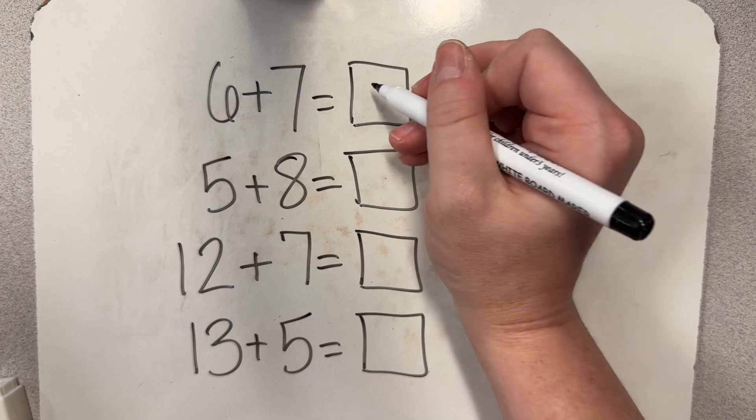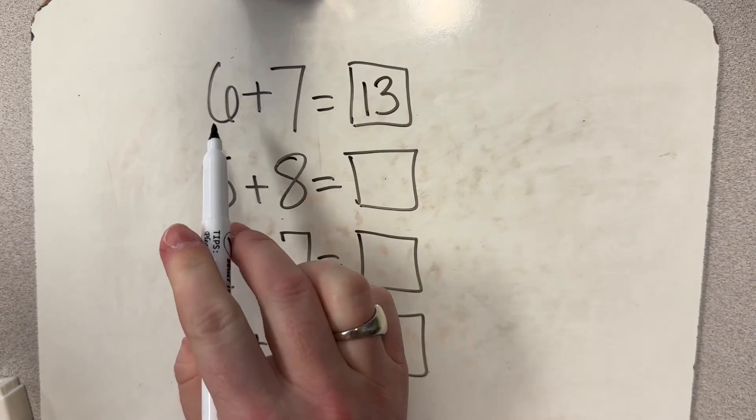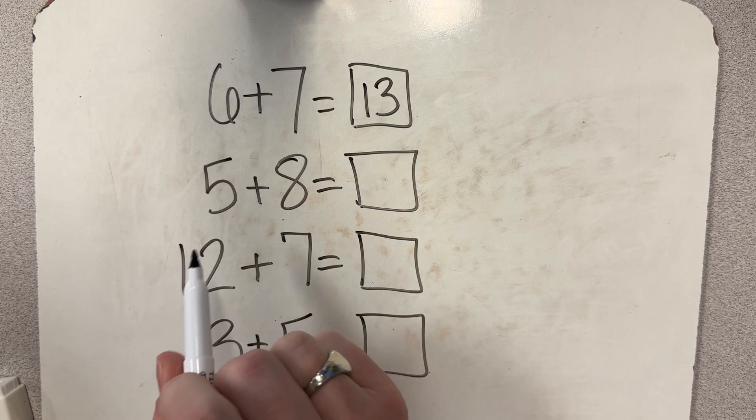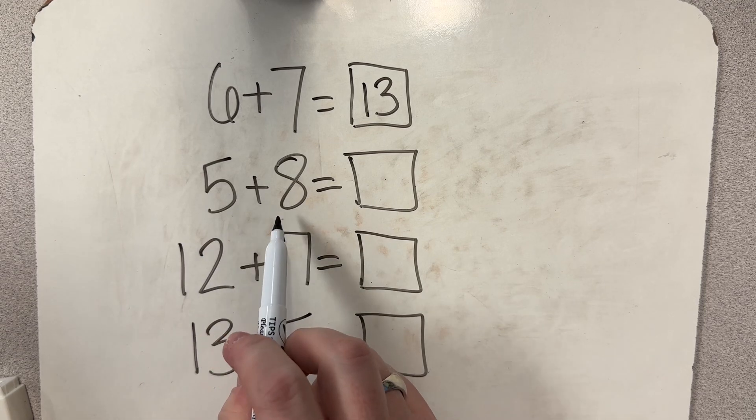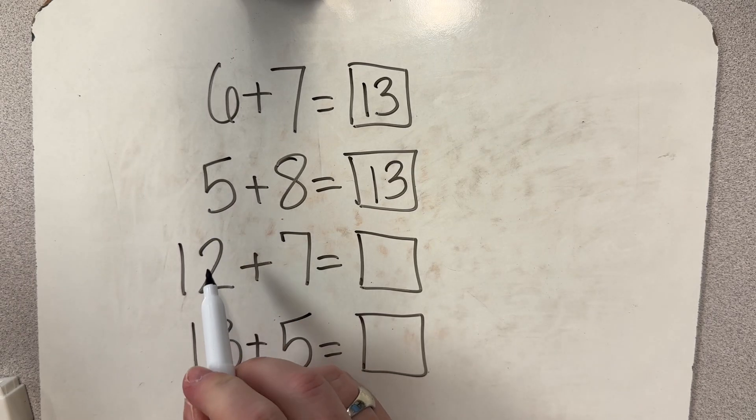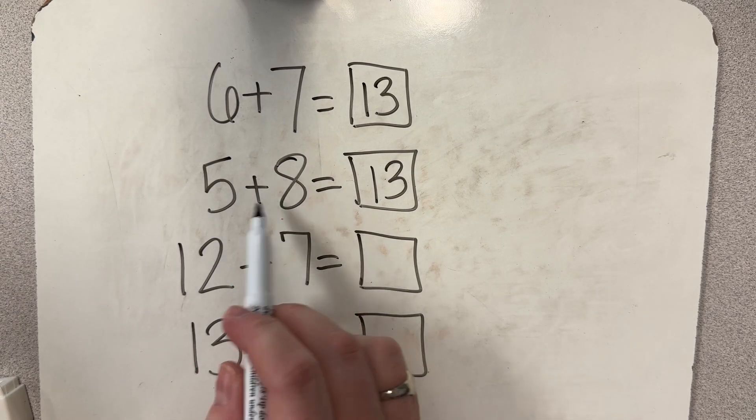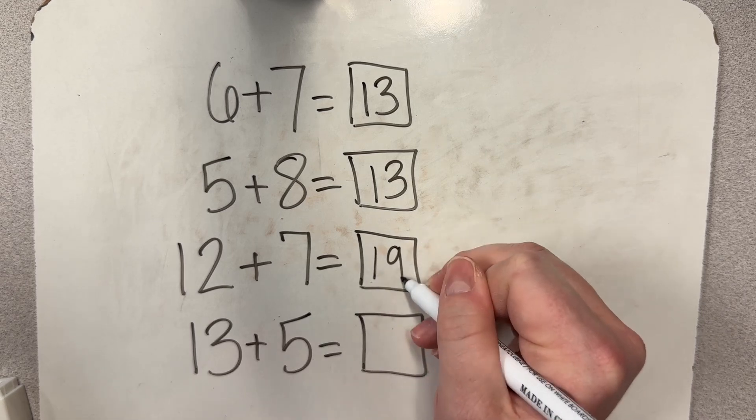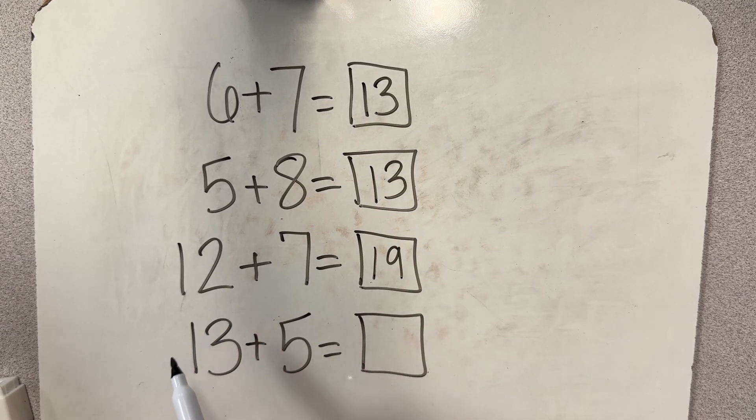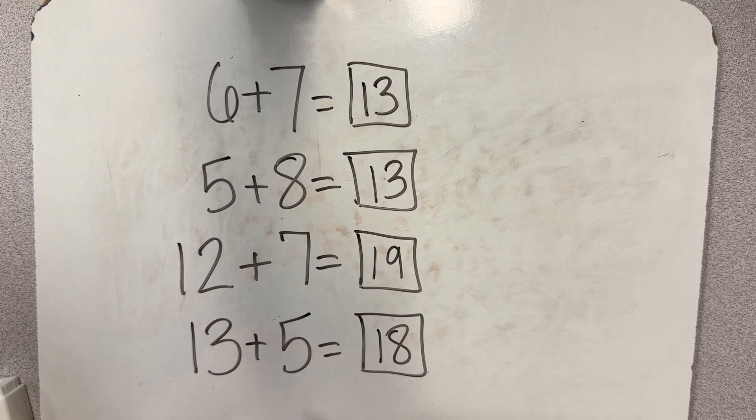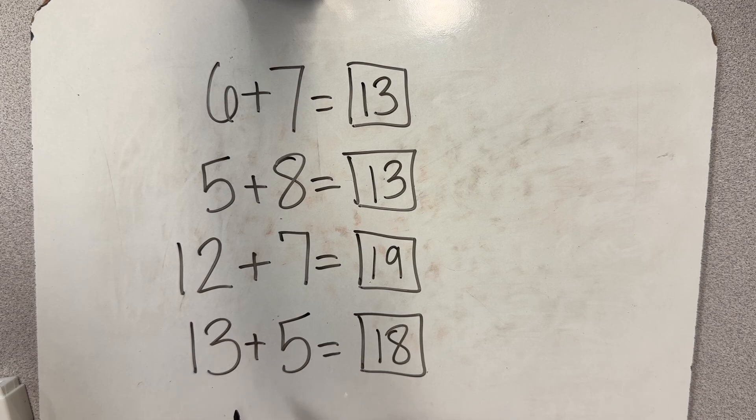Six plus seven is 13. I used three from six to make a 10 with my seven. So 10 and three more is 13. For five plus eight, it also equals 13. I used two from the five to make a 10 with the eight and then I had three left over. 12 and seven more is 19 because seven and two is nine. Nine and 10 more is 19. And 13 and five is 18. That's three plus five is eight. Eight and 10 more is 18.